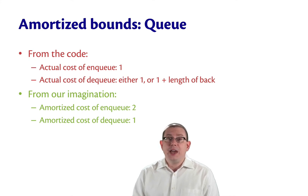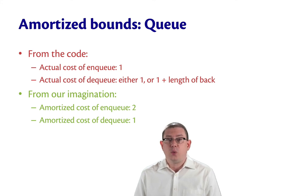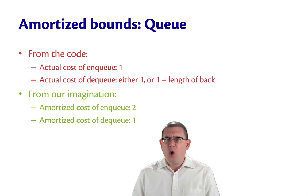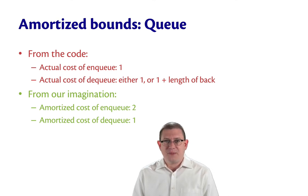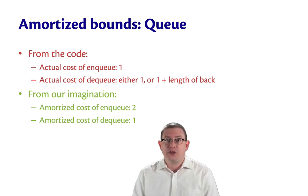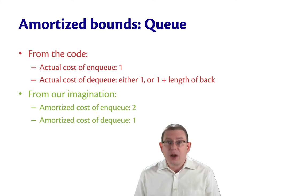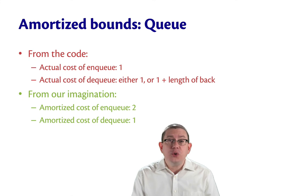Now, from our imagination — from being creative in our bookkeeping — let us define the amortized cost of enqueue to be 2 and the amortized cost of dequeue to be 1. What we're saying here, by fiat, is that we're only going to pay 1 for a dequeue ever, but we're going to pay twice the normal price for any enqueue operation. Then what we need to do for any sequence of operations is to prove that the total amortized cost is bigger than the total actual cost.